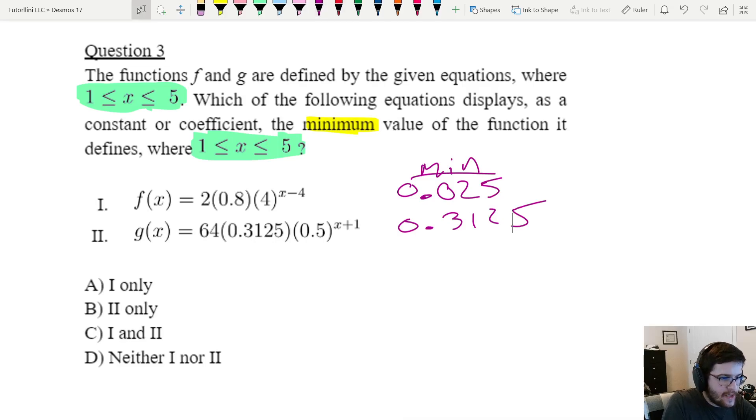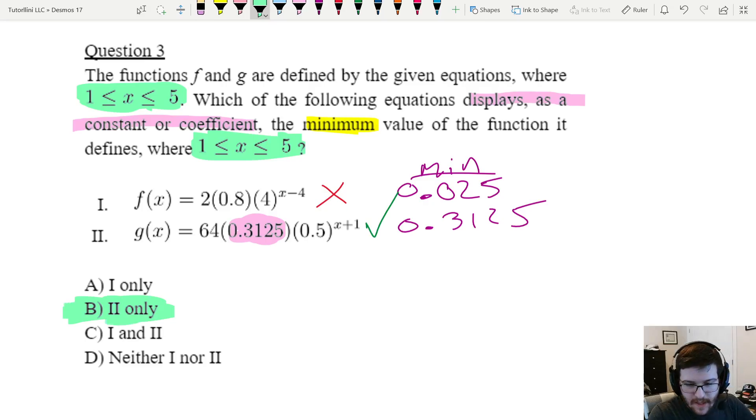Okay, so, I added the mins to our little chart here. And, we are once again looking to see where it's displayed as a constant or coefficient. So, basically, just do you see that number somewhere in the equation? I see a 2, a 0.8, a 4, and a 4. I don't see a 0.025. So, it seems like Roman numeral 1 is wrong. And, for this one, I see a 64, 0.3125, a 0.5, and a 1. So, 0.3125 was the min that we got. So, I think this one is correct. So, once again, just coincidentally, I think the answer to this one is 2 only.